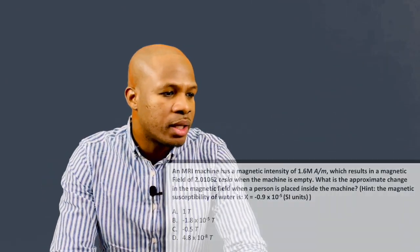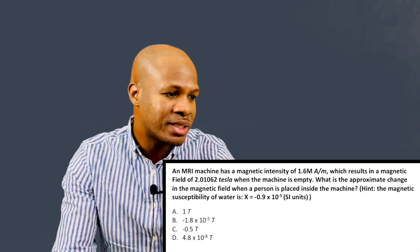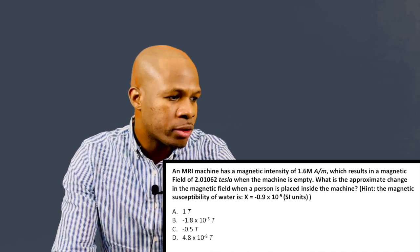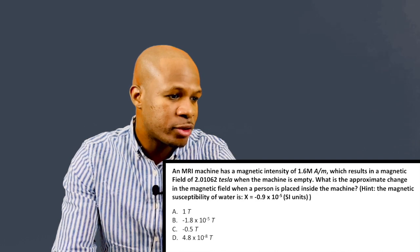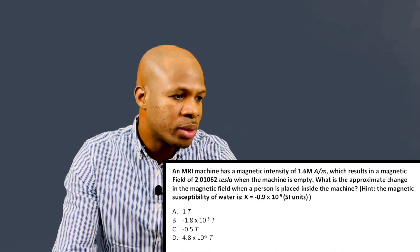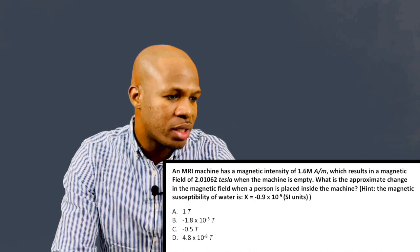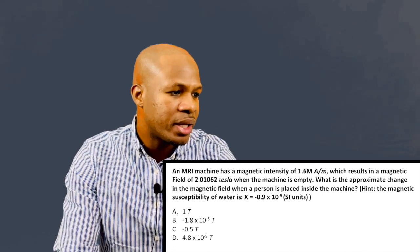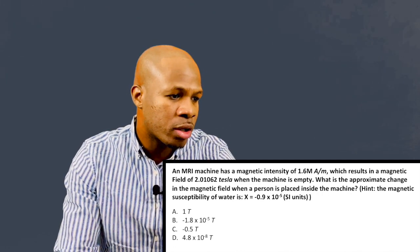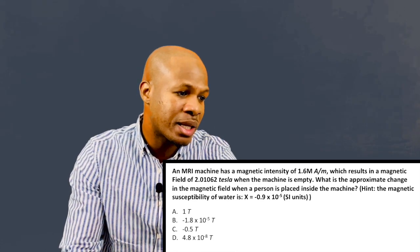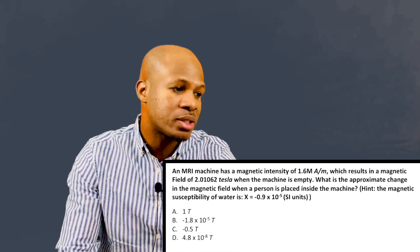Question number two states, an MRI machine has a magnetic intensity of 1.6 million amps per meter which results in a magnetic field of 2.01062 tesla when the machine is empty. What is the approximate change in the magnetic field when a person is placed inside the machine? Hint, the magnetic susceptibility of water is chi equals negative 0.9 times 10 to the negative 5 in SI units.